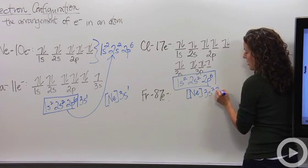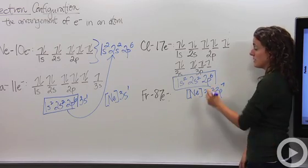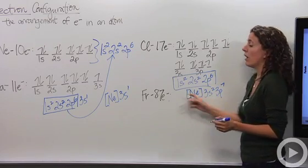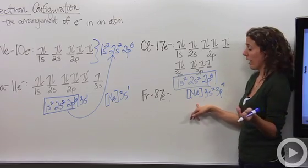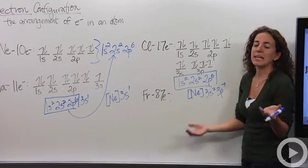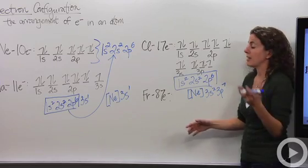So instead I'm going to just write neon, 3s2, 3p7. So this is the electron configuration for chlorine. We're going to call these two, this one and this one, the noble gas configuration. Okay? So, which is the same thing as electron configuration. It's just a little bit shorter and easier to write, easier to manage.